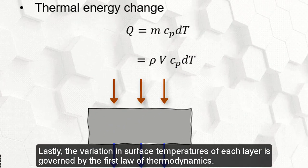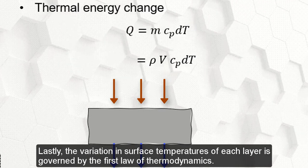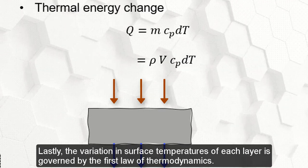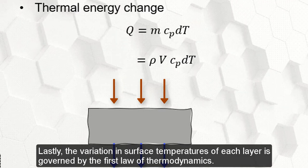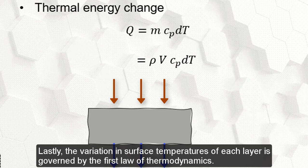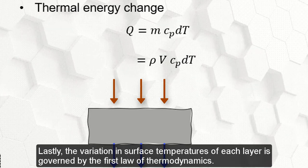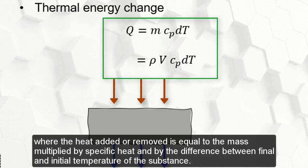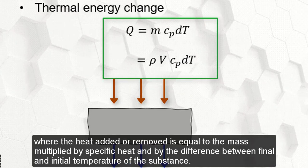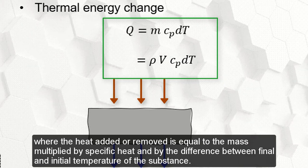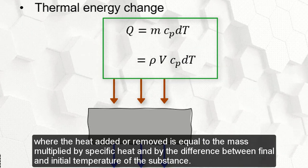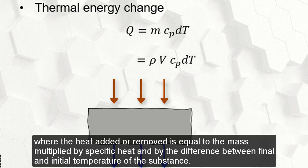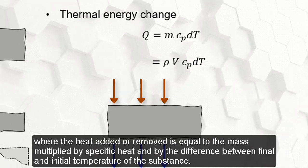Lastly, the variation in surface temperatures of each layer is governed by the first law of thermodynamics, where the heat added or removed is equal to the mass multiplied by specific heat and by the difference between the final and initial temperature of the substance.